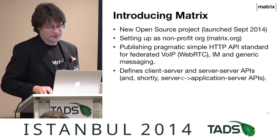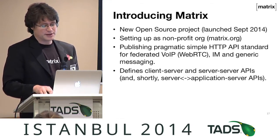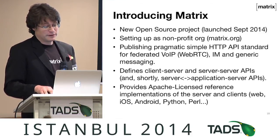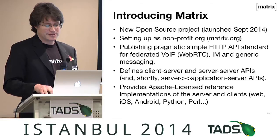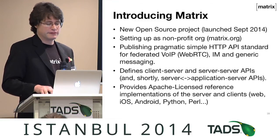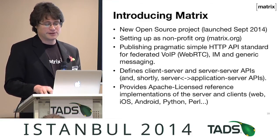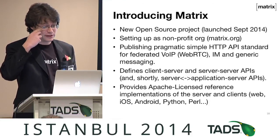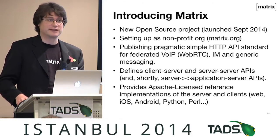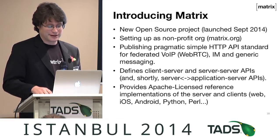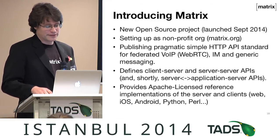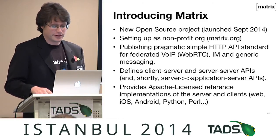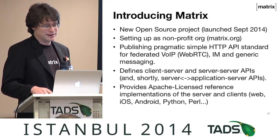We've defined the client-server and the server-to-server API, and we'll have server application and other APIs coming shortly. We're also providing open source reference implementations of all of this — a Python server written in Twisted. A community member even wrote a server in Golang, which shows our spec is usable. And we have lots of clients: Angular, JavaScript, iOS, Android, Python, Perl — we're adding as many clients as we can.